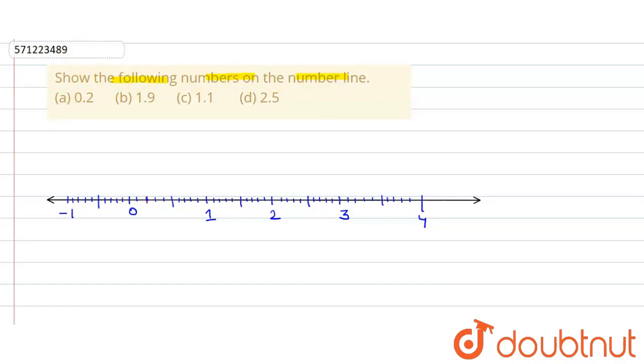The first number we have to represent on the number line is 0.2. It will be between 0 and 1 because the digit before the decimal point is 0. Here will be 0.0, then 0.1, and then 0.2. So that's our representation of 0.2 on the number line.